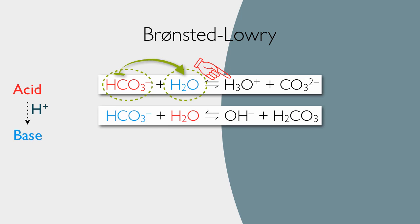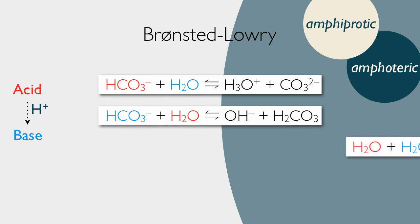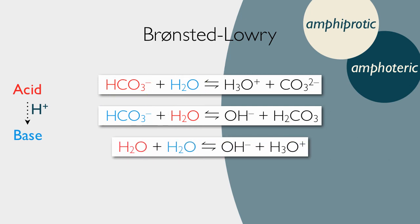Now look at this example. Here we have the exact same reactants, but now the water is acting like an acid and is going to pass a proton to the bicarbonate, which will therefore be a base. There's the bicarbonate with its extra proton. Chemicals like this, that can act as both a base or an acid, are called amphoteric or amphiprotic, which are synonyms. Water can react with itself — water acting like an acid and water acting like a base, passing the extra hydrogen over, yielding hydronium ion and hydroxide ion.